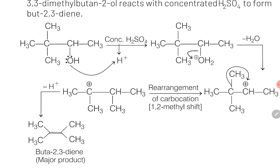In the final product you can see that there is a double bond and four CH₃ groups are attached to it. Because CH₃ groups are electron donating, they stabilize this double bond and hence the final product is quite stable. With this we have completed the second question.